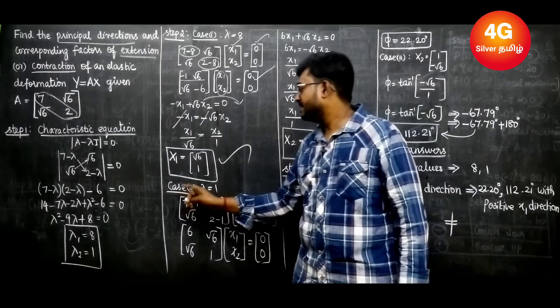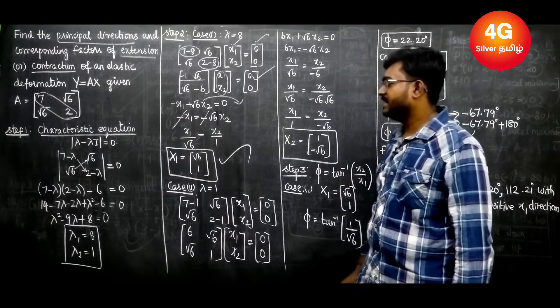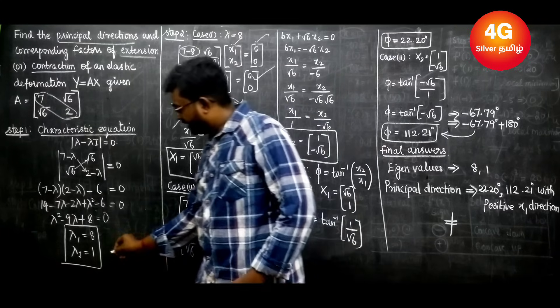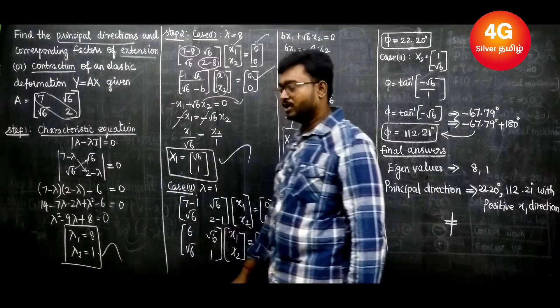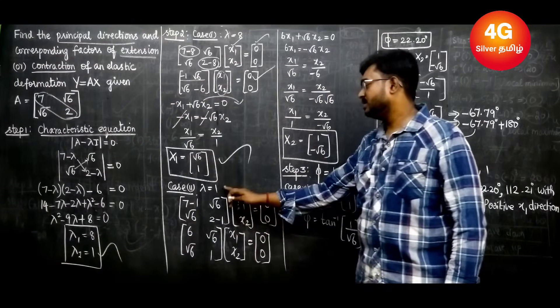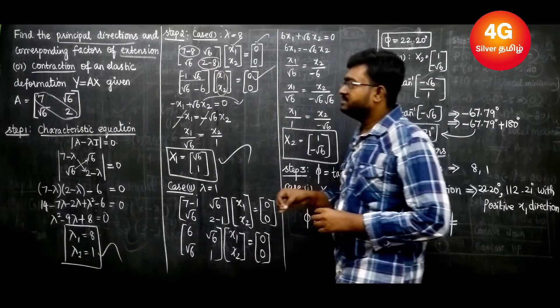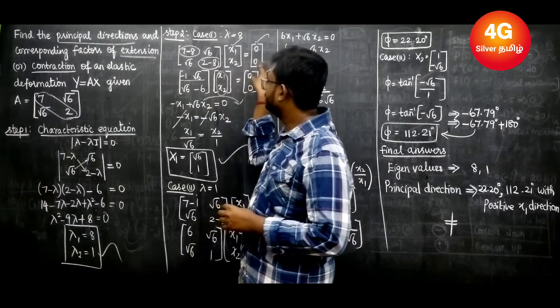Case 2: the second lambda value is λ = 1. So we take λ = 1 and repeat the same format, substituting into (A − λI)x = 0.